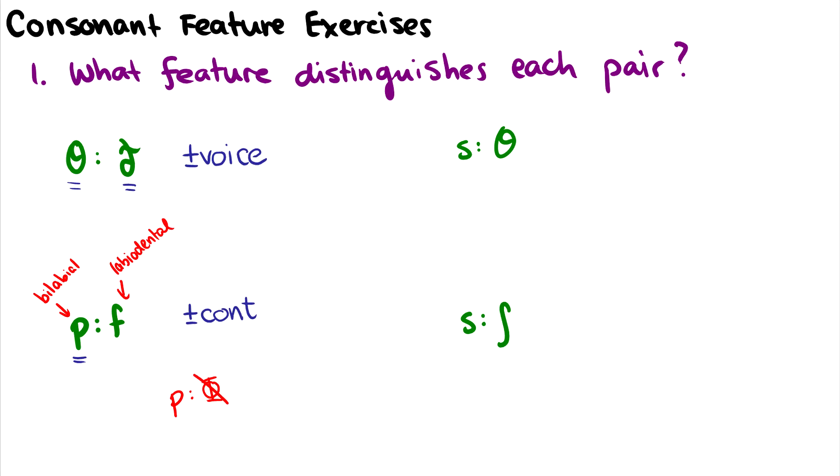But in English, we don't have this bilabial fricative. The closest thing we have in English is this f. So in terms of features for English consonants, the only contrast or the only distinctive feature that separates these two sounds is plus or minus continuant.